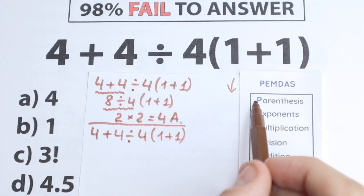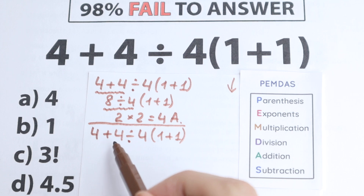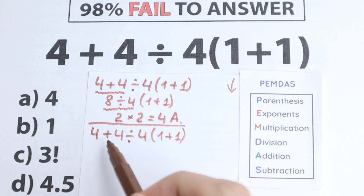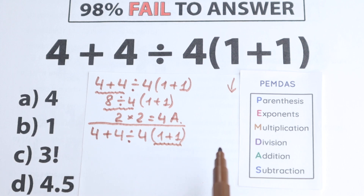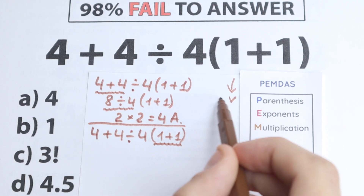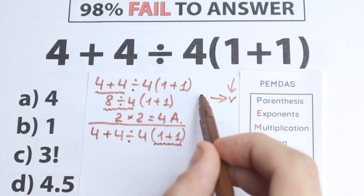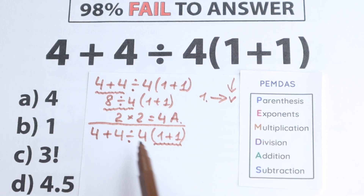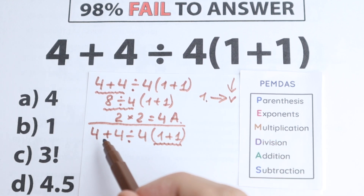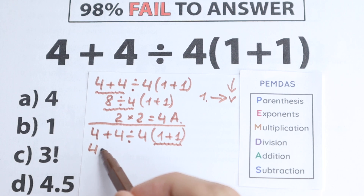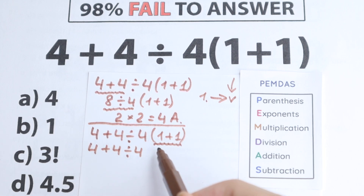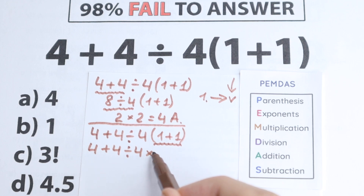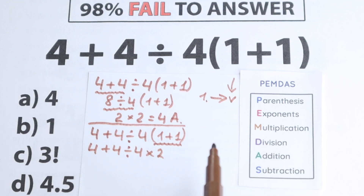The first step in PEMDAS is Parentheses. Where do we have parentheses? We have parentheses on the right-hand side, so we need to start there. Our expression becomes: 4 plus 4 divided by 4, and in parentheses 1 plus 1 equals 2, giving us times 2.